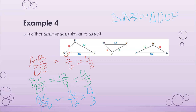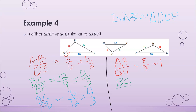Now I check if ABC is also similar to GHJ. AB to GH is 8 over 8, which simplifies to 1. Then BC to HJ is 12 over 10, which simplifies to 6/5. Since those two ratios are not equal, triangle ABC is not similar to triangle GHJ.